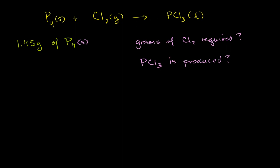So let's make sure. On the left-hand side, this molecule of phosphorus has four phosphorus atoms. So on the whole left-hand side, all of our reactants combined have four phosphorus atoms. Our products need to also have four phosphorus atoms, but the way it's written right now I only have one. So let me multiply this by four.